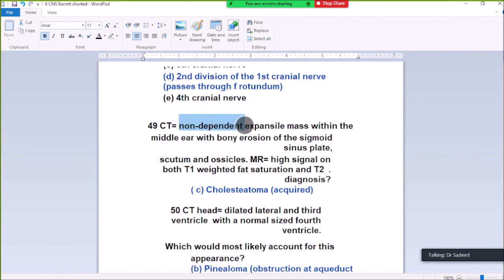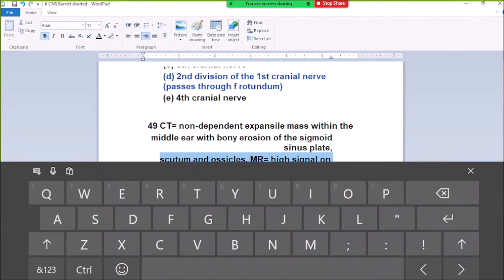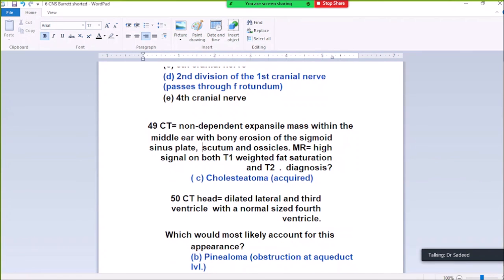Question 49. CT shows non-dependent expansile mass within the middle ear with bone erosion of the scutum and ossicles. MRI shows high signal on both T1 and T2-weighted images. Diagnosis is acquired cholesteatoma. Because it is high on T1, indicating cholesterol, it is cholesteatoma. It shows erosion of scutum and ossicles, so diagnosis is acquired cholesteatoma.